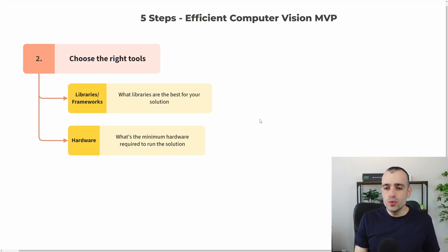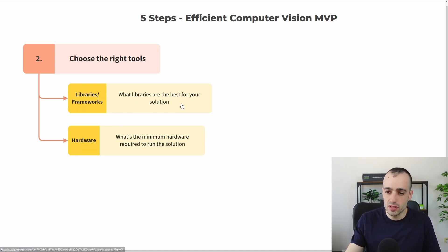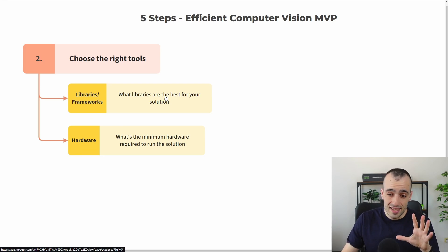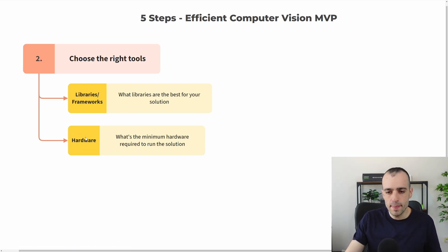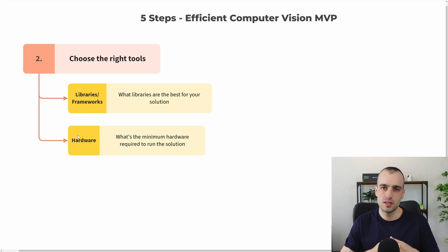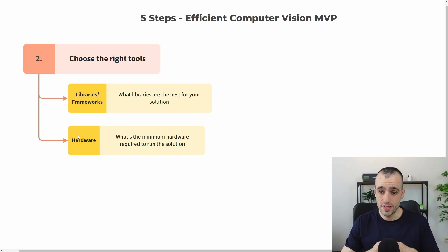Step number two: choose the right tools. The right tools are two things you mostly need to focus on — on the software side, which libraries and frameworks are best for your solution, and on the hardware side, what's the minimum hardware required to run the solution. I want to be clear on this because I see many developers making a mistake here — hardware optimization is a complex part of implementation and takes a lot of time. So unless it's a strict requirement from the beginning, it's good to choose hardware that will make working on the MVP very simple.